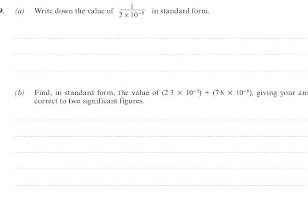Right, this question is testing your understanding of standard form and significant figures. So the first one says write down the value of 1 times 2 times 10 to the minus 1 over 2 times 10 to the minus 6 in standard form.